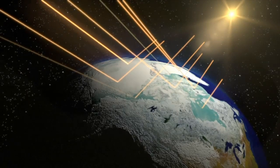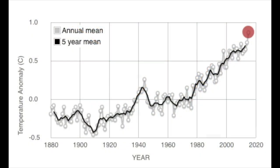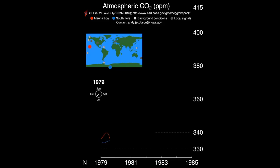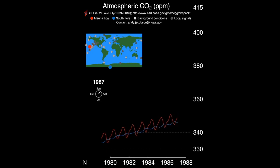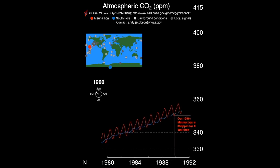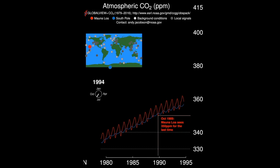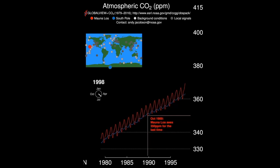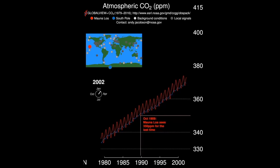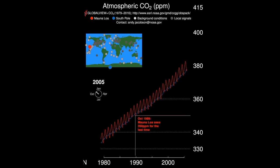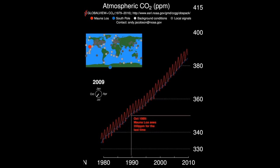Recent measurements using modern instruments have shown that we are no longer following natural trends. Since the Industrial Revolution in 1760, human activities have had an effect on observed temperature change. For hundreds of thousands of years, carbon dioxide levels ranged from 280 parts per million during warm interglacial periods and 180 parts per million during cold glacial periods, until 1950, when carbon dioxide broke 280 parts per million for the first time in recorded history.